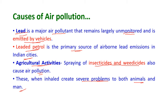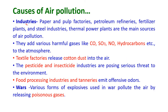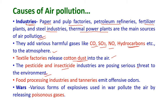Industries like paper and pulp factories, petroleum refineries, fertilizer plants, steel industries, and thermal power plants are the main sources of air pollution. These industries add various harmful gases like carbon monoxide, sulfur dioxide, nitrogen oxide, and hydrocarbons into the atmosphere. Textile factories release cotton dust into the air, and pesticide and insecticide producing industries pose a serious threat to the environment. Food processing industries and tanneries emit offensive odors into the environment.